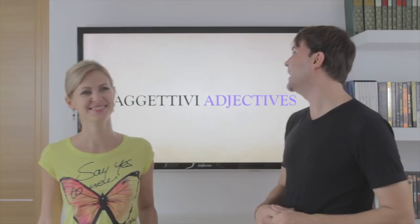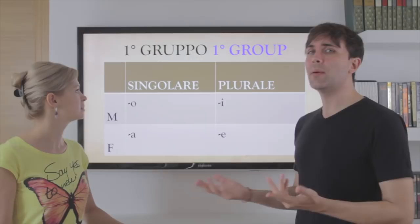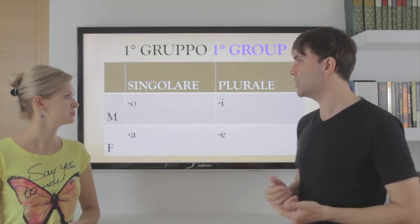Okay, let's see. Today let's take a look at the adjectives. Now, remember when we talked about the nouns, we had two groups — the endings of the nouns. That was at the beginning of our course. This is the same, it's pretty much the same. So you have two groups.